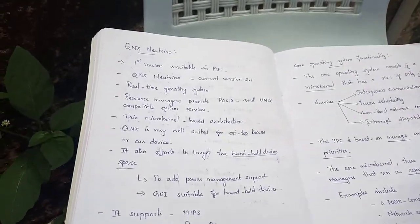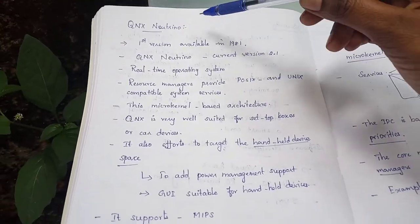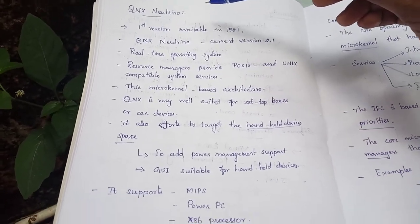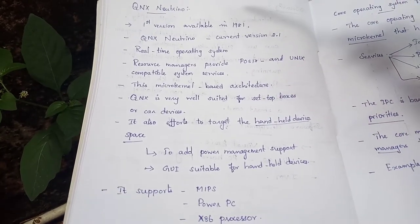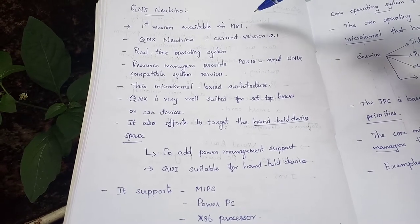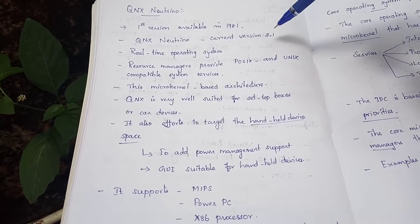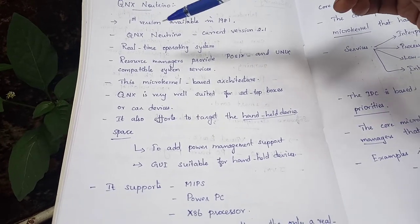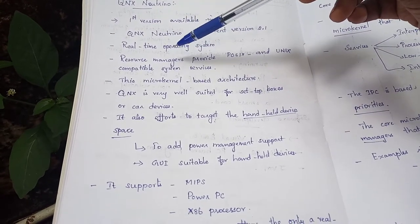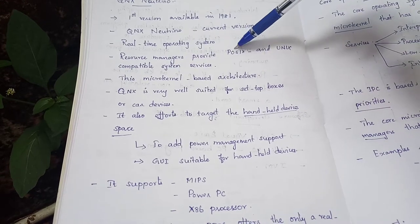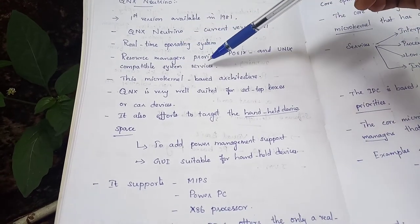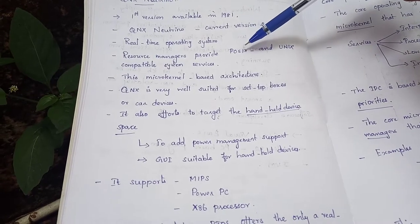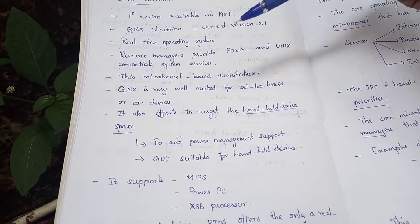Today we are going to discuss QNX Neutrino, a real-time operating system. The first version is available from 1981 and the current version is 2.1. It includes a resource manager that provides POSIX and UNIX compatible system services. POSIX means Portable Operating System Interface.